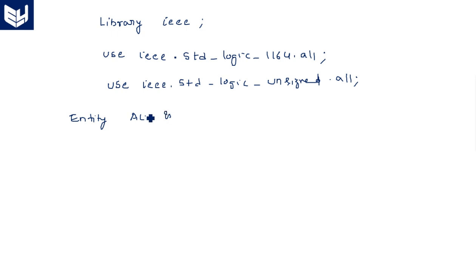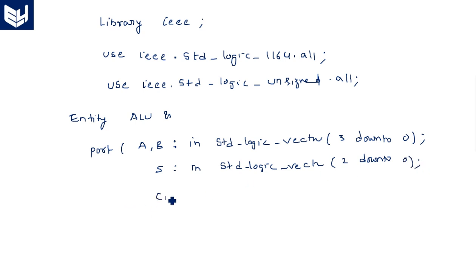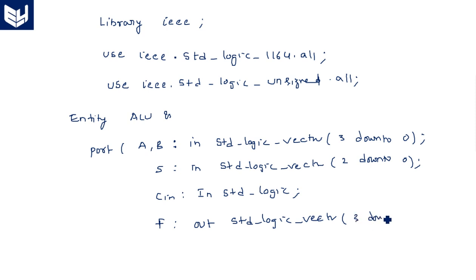The entity for the ALU is: entity ALU is port( A, B : in std_logic_vector(3 downto 0) — the operands A and B are 4-bit vectors; S : in std_logic_vector(2 downto 0) — the selection line is now reduced to 3 bits; Cin : in std_logic — carry-in is a single bit; F : out std_logic_vector(3 downto 0) — the output function is a 4-bit vector. End ALU. These are the inputs and outputs for this ALU.